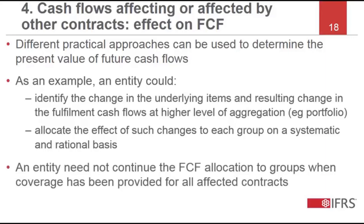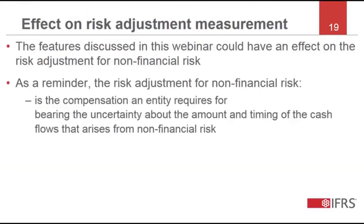After all the coverage has been provided to the contracts in the group, the fulfilment cash flows may still include payments expected to be made to current policyholders in other groups or future policyholders. An entity is not required to continue to allocate such fulfilment cash flows to specific groups, but can instead recognise and measure a liability for such fulfilment cash flows arising from all groups. The fulfilment cash flows are the sum of the present value of probability-weighted expected cash flows, which reflect financial risk, and an explicit risk adjustment for non-financial risk, such as insurance risk.